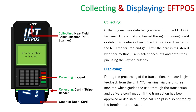Now we move into the displaying devices. We're getting prompts from the screen while doing all this — that green monitor is giving us feedback. During the processing of the transaction, the user is given feedback via the EFTPOS terminal's on-screen monitor, which guides them through the transaction and delivers a confirmation if the transaction has been approved or declined. A physical receipt is also printed by the terminal at the end as proof of purchase.